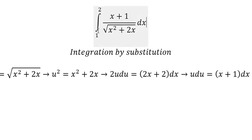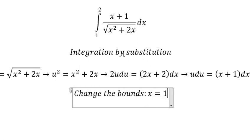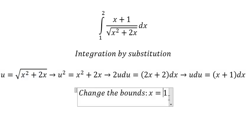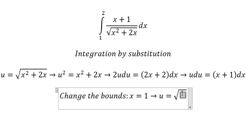Now we need to change the boundaries in here. If x equals to number 1, so we put number 1 going here and here. So you got u equals to the square root of number 3.